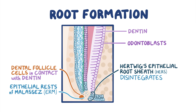Permanent teeth develop in a manner similar to that of deciduous teeth but begin at around week 14 of intrauterine life. The first step is the extension of a tiny bit of dental lamina just behind the deciduous tooth bud, called the successional lamina, which gives rise to the tooth bud of all permanent teeth except the molars. The dental lamina in the posterior regions of the jaw gives off tooth buds that undergo the same stages of development as the deciduous tooth bud.